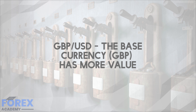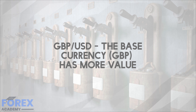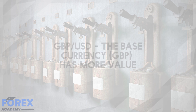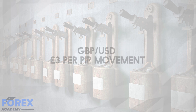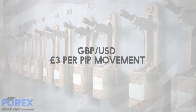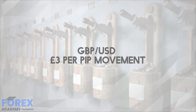In GBPUSD, where the pound is the base currency, the base currency has more value than the counter currency on a unit by unit basis. Based on this example, this would equate to approximately £3 per pip movement while trading in GBPUSD.